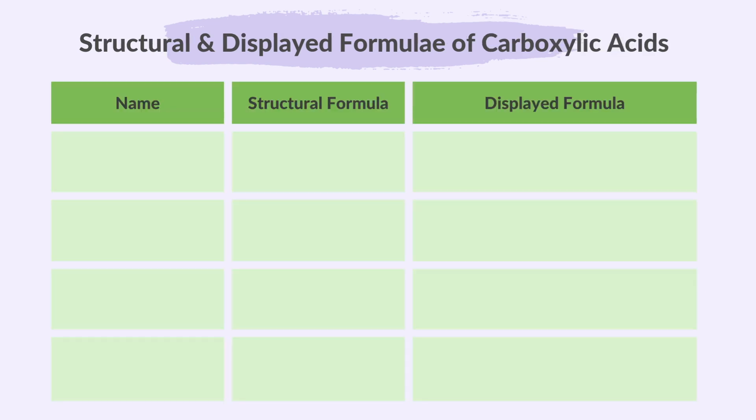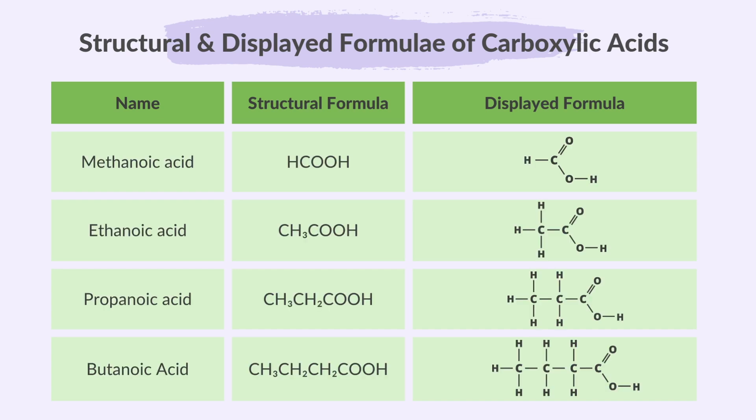Carboxylic acids do not require numbering because the carboxyl group is always at the end of the carbon chain, making its position clear by default. Here are the structural and displayed formulas for carboxylic acids containing up to four carbon atoms per molecule.